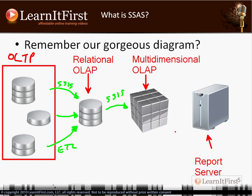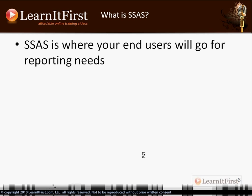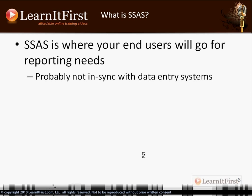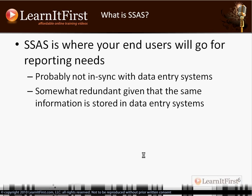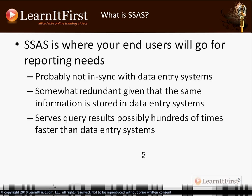So where does Analysis Services fit in the equation? It fits right here — that's where your users go for reporting. They could go back to the data entry systems, but that would be really slow. They could go to the relational data warehouse, but that would be even slower because there are a lot more rows. The multi-dimensional database has pre-calculated aggregates, so it's much faster. Because it stores those pre-calculated aggregates, query results are near-instant — where they might have taken 20 minutes or two hours had you gone to one of the other systems.